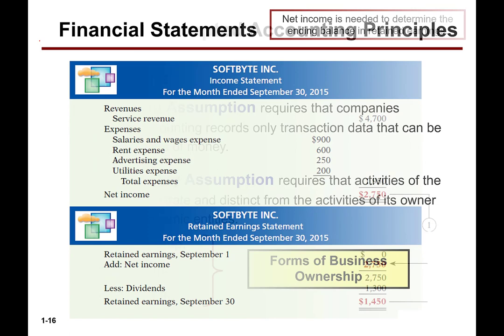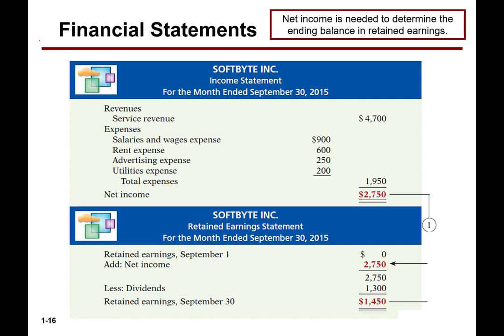Now let's take a look at a set of financial reports. When we look at financial reports, we have our revenue — the money that you made, what you earned. Then we have expenses — costs that you incurred in the generation of revenue. Revenue minus expenses equals net income.